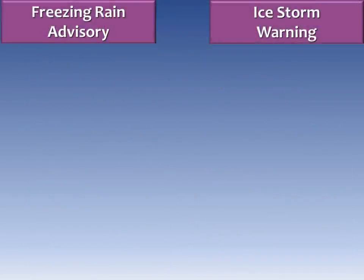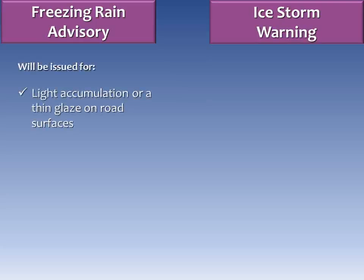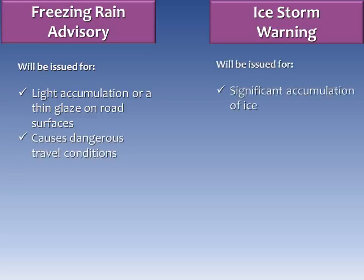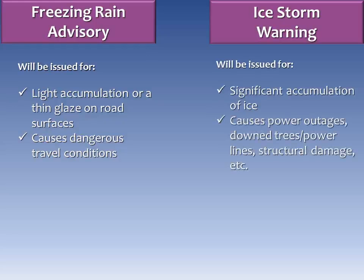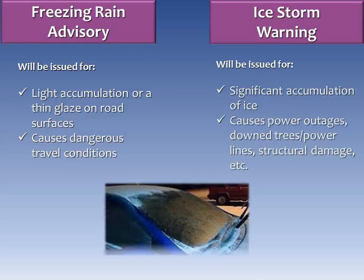Freezing rain advisories and ice storm warnings are more rare events for Montana, with ice storms being much more rare than freezing rain events. While both are possible, the typical ice storms that happen most often are widely known for occurring on the east coast of the United States. Freezing rain events are much more common, and advisories are issued when there is a light accumulation or a thin glaze of rain that freezes on road surfaces, which can cause dangerous travel conditions. Ice storm warnings are for ice of a significant accumulation, which can cause widespread power outages, downed trees, downed power lines, as well as structural damage.